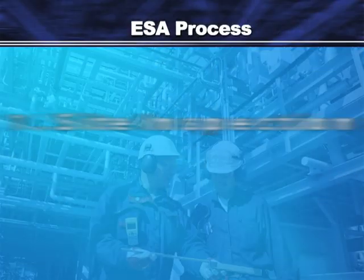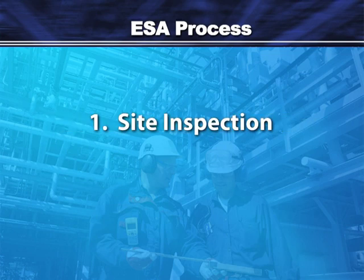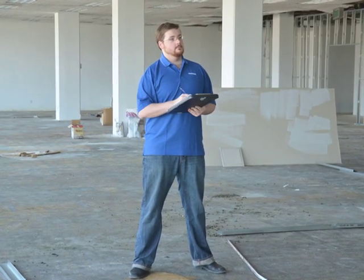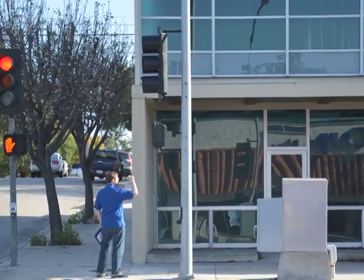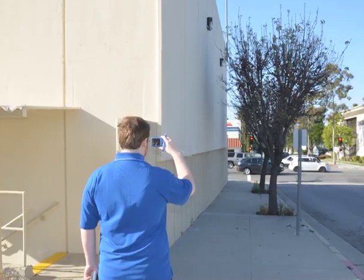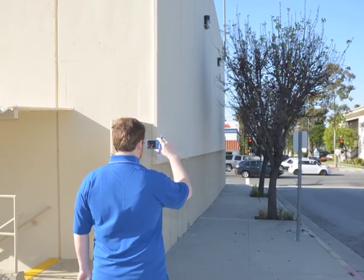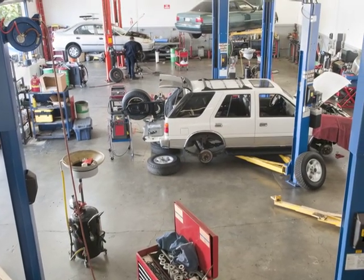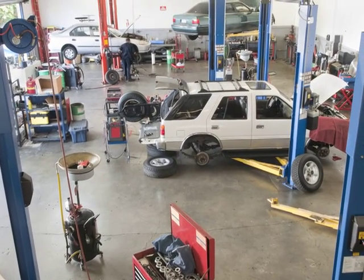The Phase 1 process includes three main components. The site inspection is a thorough visual assessment of the property, including the interior of any structures, exterior areas, and property lines. The inspection can identify current or prior on-site activities that may have contributed contamination to the soil or groundwater.